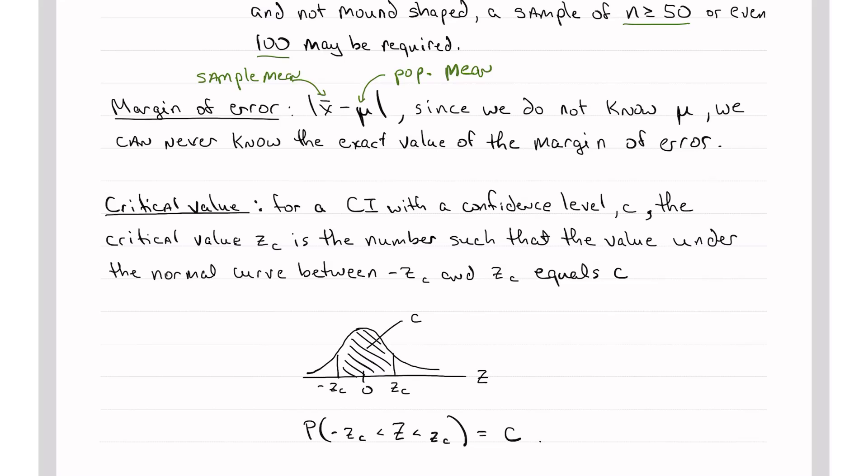Now a critical value is something else that we need. And for a confidence interval with a confidence level C, our book uses C for confidence level, and I use capital CI for confidence interval. So unfortunately, they both have the word confidence in there. So please try to keep them straight. The confidence interval is an interval. It's a range of values. It's what we're looking for. The confidence level is just how confident we are, usually expressed as a percentage.